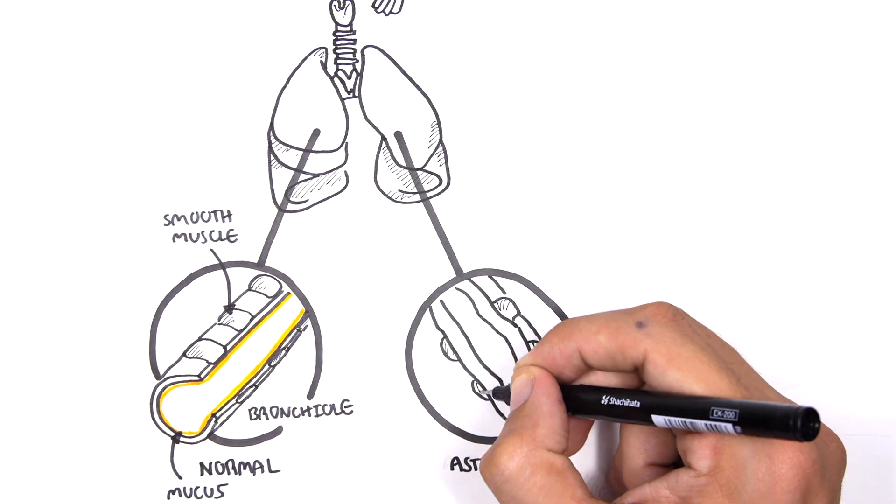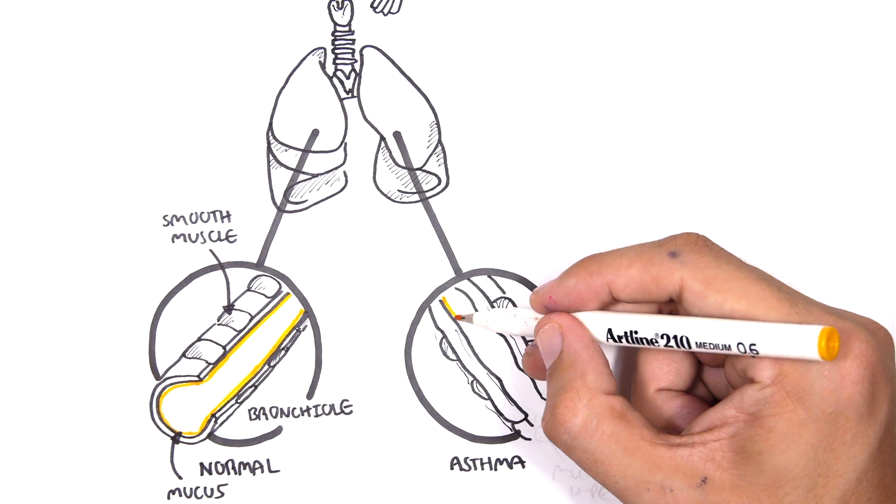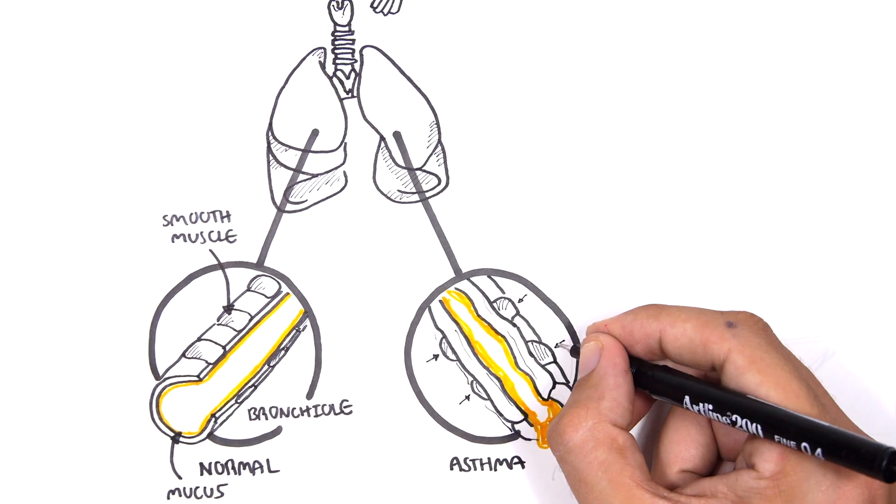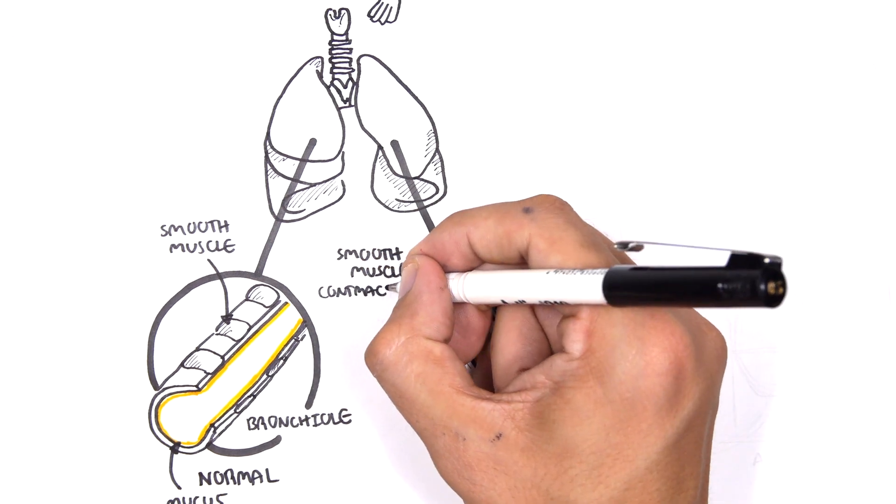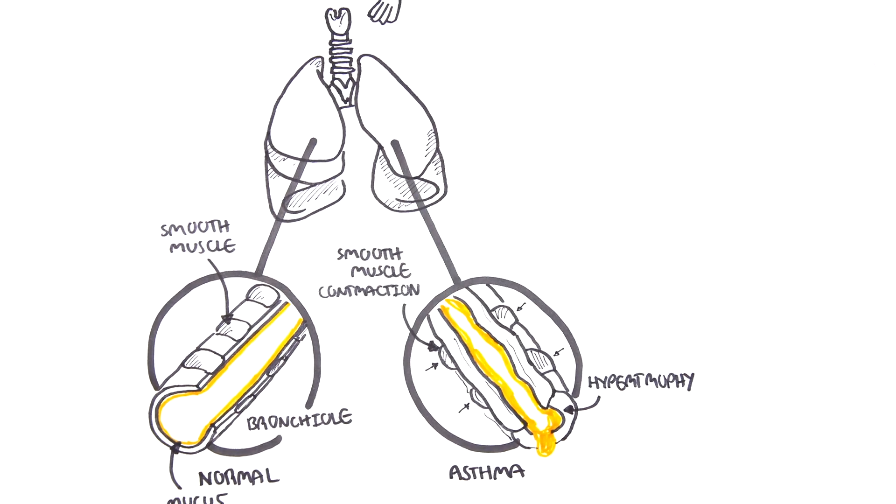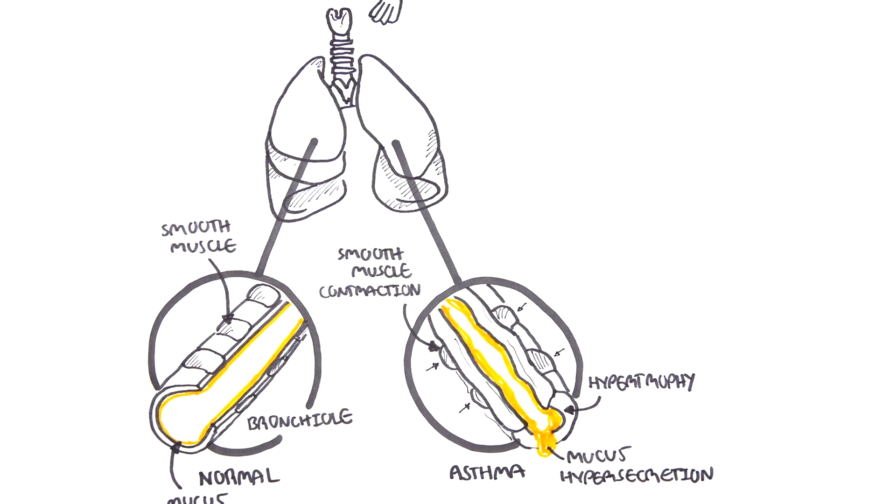In asthma there are three important changes. You have smooth muscle contraction which narrows the airways, smooth muscle hypertrophy, and mucus hypersecretion, all of which contribute to the narrowing of the airways.